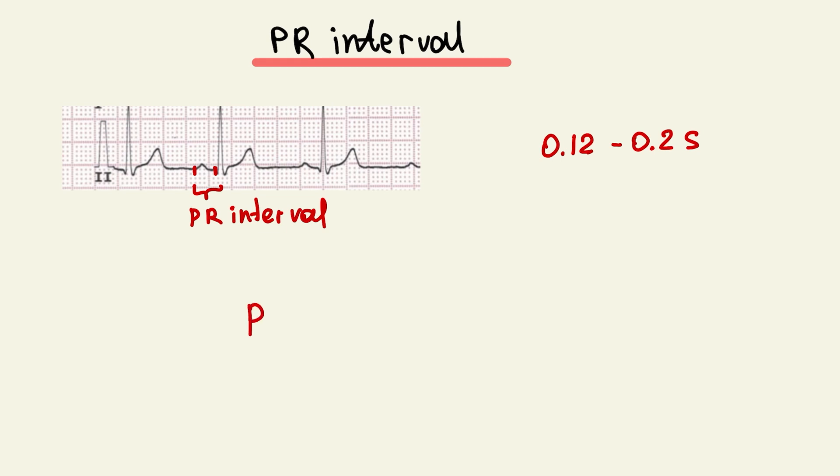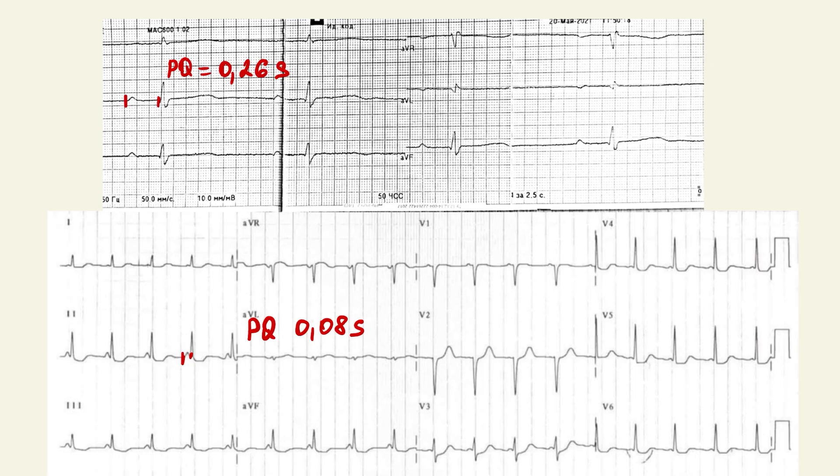If PR interval is less than 0.12 second, it's pre-excitation. If PR interval is greater than 0.2 seconds, it's AV block. Here you can see examples of first degree AV nodal block and pre-excitation.